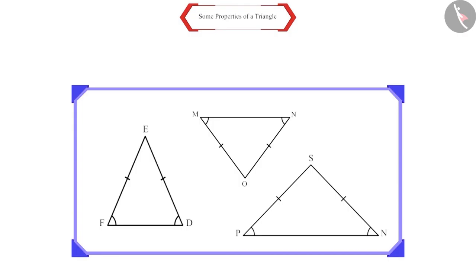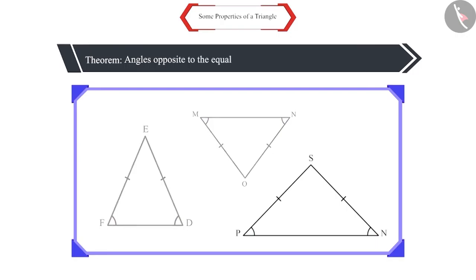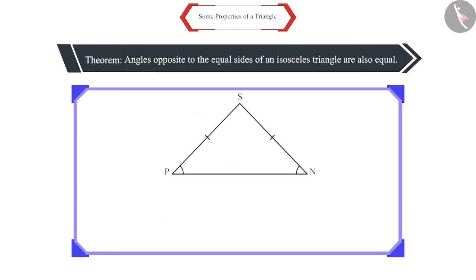And now, you will come to the conclusion that for each isosceles triangle, angles that are opposite to the equal sides are equal. We can write this as a theorem in the following manner: Angles opposite to the equal sides of an isosceles triangle are equal.